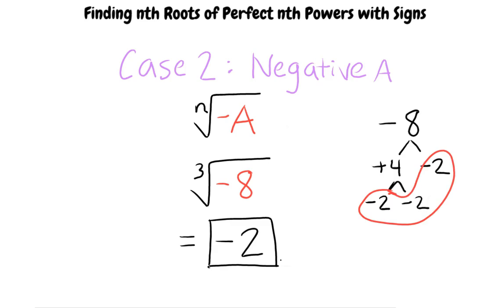Actually, in the case where n is odd, we can see from the tree that three negative 2s result from the negative 8 on the inside. So this case equals negative 2 because a negative number multiplied three times together results in a negative number.